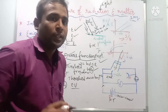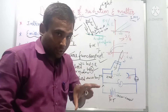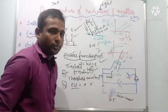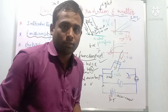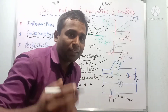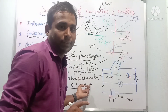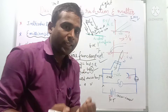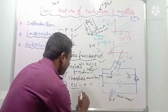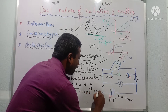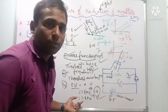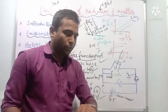Electron volt is very important for converting joules into electron volts or vice versa for CET and NEET. One electron volt is the energy gained by a single electron — one coulomb of charge — moved through one volt. The value of electric charge is 1.6 × 10⁻¹⁹ coulombs, so 1 eV = 1.6 × 10⁻¹⁹ joules.